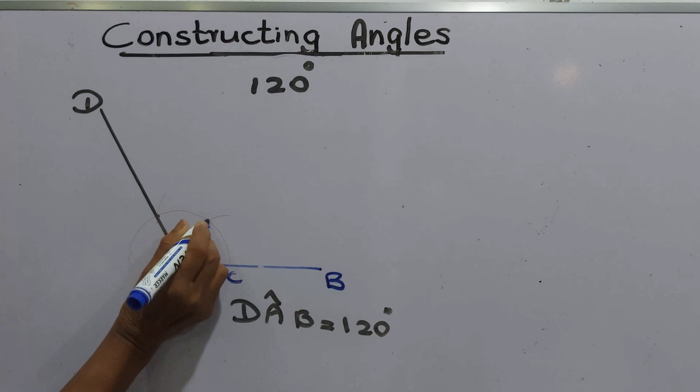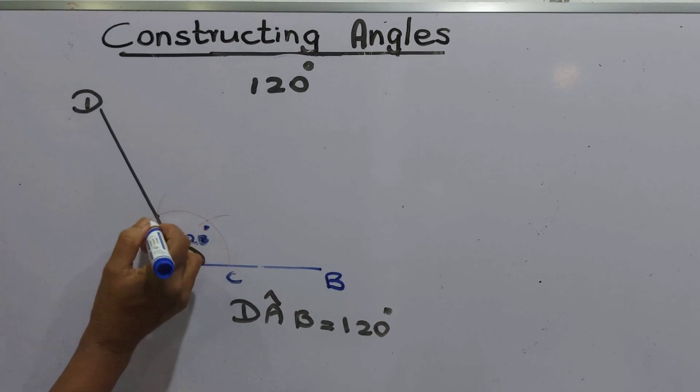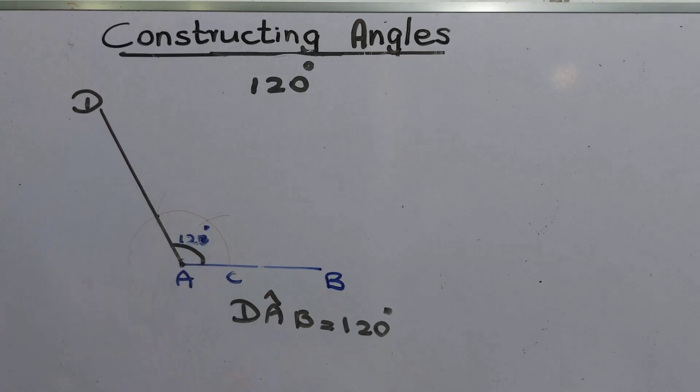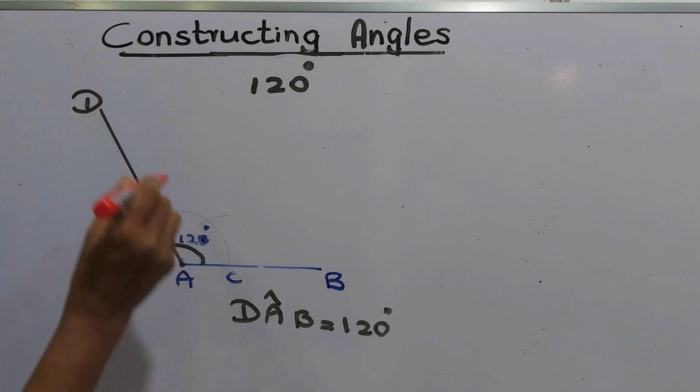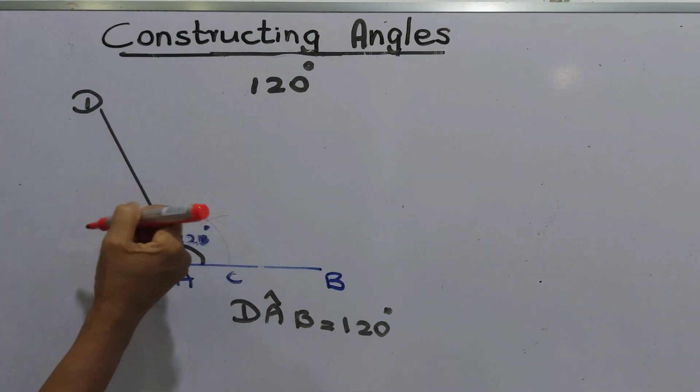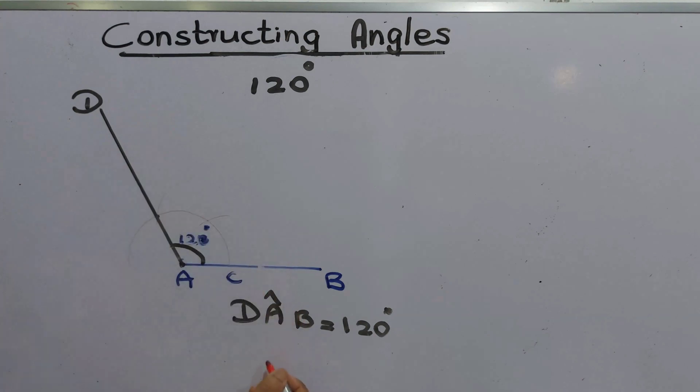This is 60 degrees, another arc, when you draw another arc that gives 120 degrees. What do you know about 120 degrees? In earlier lesson we did 90 degrees here, that is more than 90 degrees. That is obtuse angle.